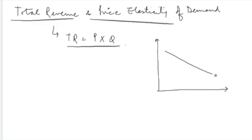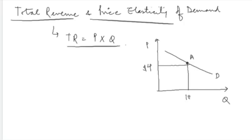Suppose this is the demand curve. Here you have prices on one axis and quantity on the other. Suppose this is the equilibrium point, and at this point the price is $4 and the quantity is 100 units. So the equilibrium price is $4 and equilibrium quantity is 100 units. In this coordinate, this area represents the total revenue.